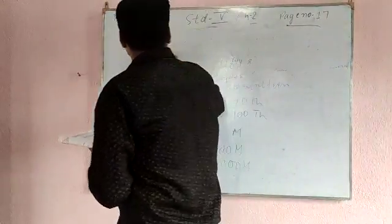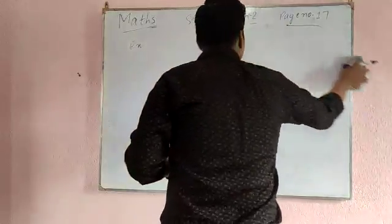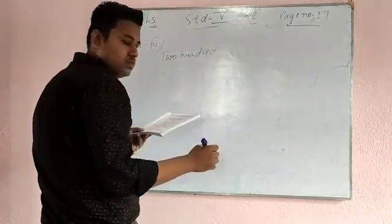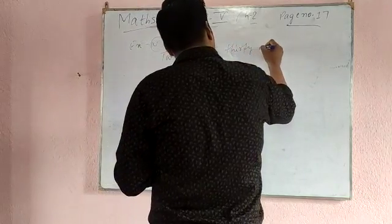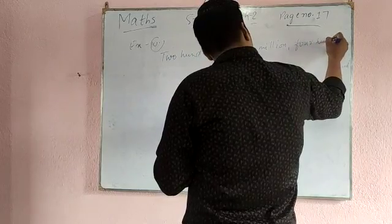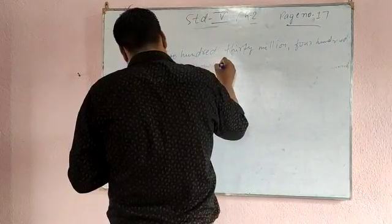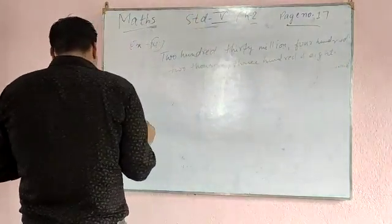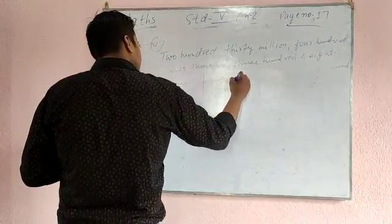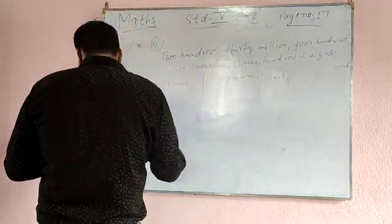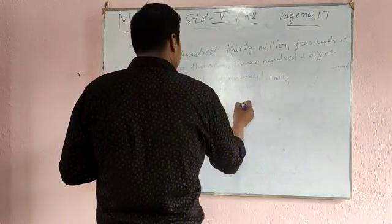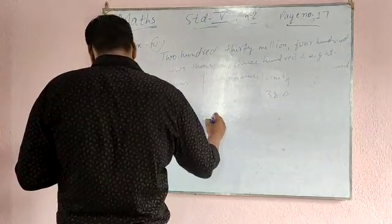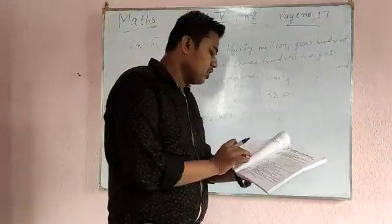Now come to example number 10. Write the following in figures: 213 million, 400 thousand, 2,000, 380. So 213 will come in the millions place, 400 and 2,000 in the thousands place, and 380 in the units. The answer is 213,402,380. So with the help of this example you will solve exercise 5.